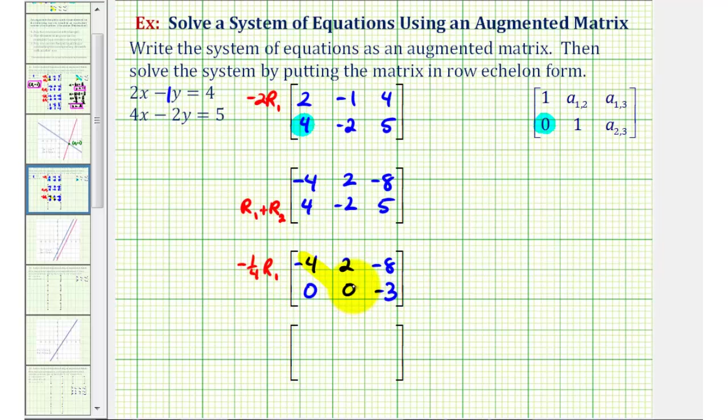Looking at the second row, we have a zero in the main diagonal, which indicates we'll have either no solution or infinite solutions, which we'll come back to, but we still want this first entry here to be positive one. So we're going to replace row two with negative one-third times row two.